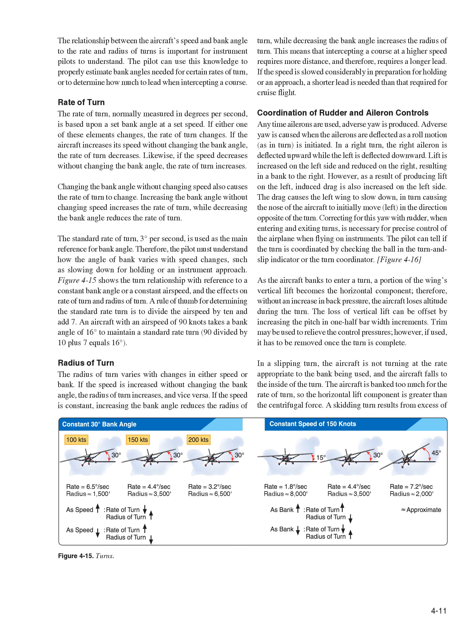Coordination of Rudder and Aileron Controls. Any time ailerons are used, adverse yaw is produced. Adverse yaw is caused when the ailerons are deflected as a roll motion is initiated. In a right turn, the right aileron is deflected upward while the left is deflected downward. Lift is increased on the left side and reduced on the right, resulting in a bank to the right. However, as a result of producing lift on the left, induced drag is also increased on the left side. The drag causes the left wing to slow down, in turn causing the nose of the aircraft to initially move left — in the direction opposite of the turn. Correcting for this yaw with rudder, when entering and exiting turns, is necessary for precise control of the airplane when flying on instruments.